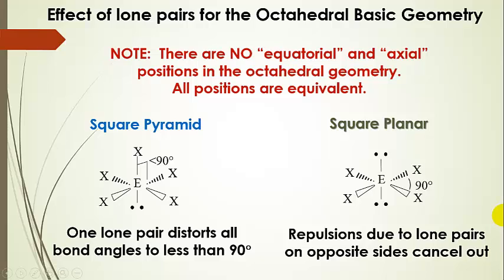The square planar geometry has 90-degree bond angles. Notice that the lone pairs were placed 180 degrees apart from each other, and they always need to be placed 180 degrees apart from each other. When you do that, then you end up with repulsions that cancel out, and so that's why we're back to 90-degree bond angles. This is a square plane that is coming in and out of the screen, and that's where this shape gets its name.